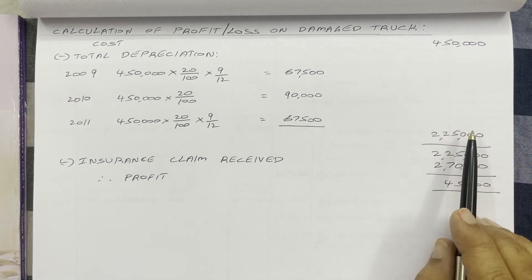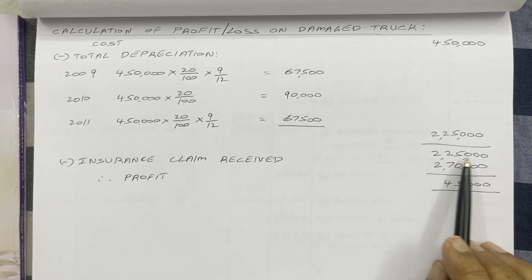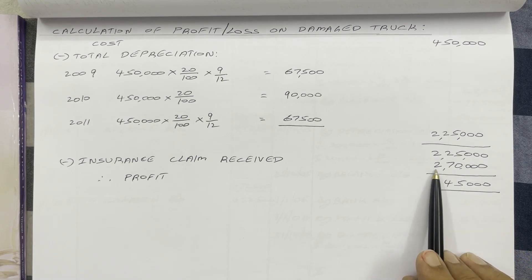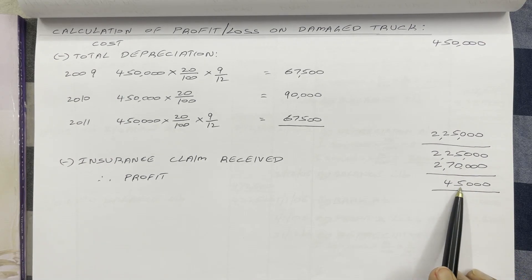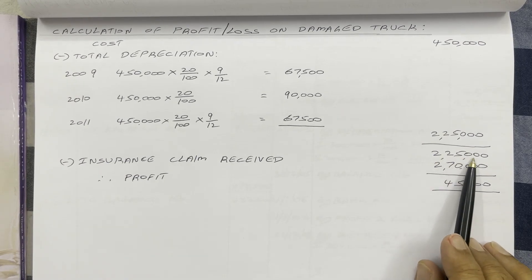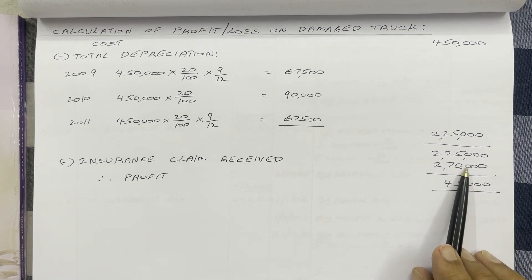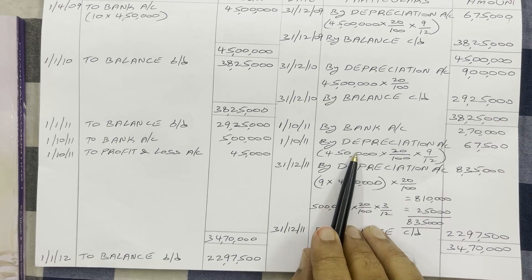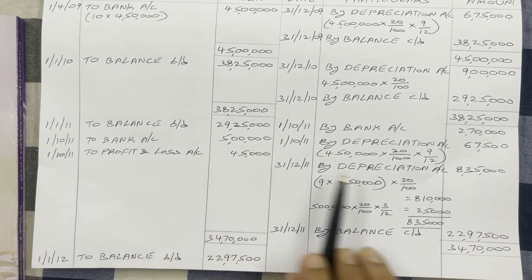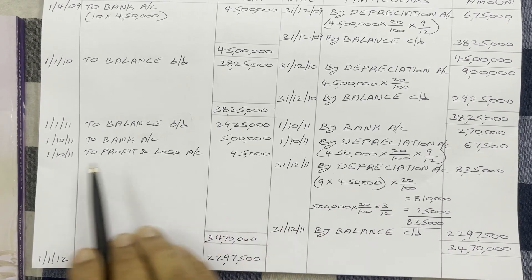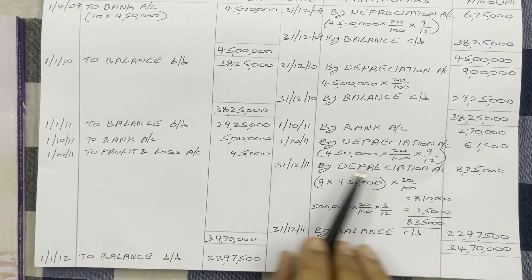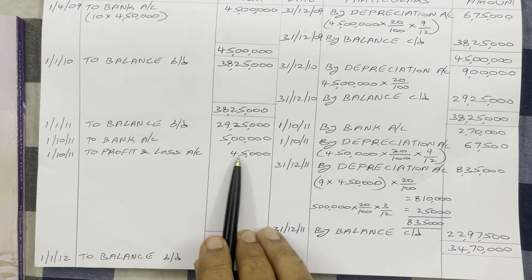Cost Rs 4,50,000 minus total depreciation Rs 2,25,000 — remaining book value is Rs 2,25,000. This Rs 2,25,000 worth asset is damaged, but the insurance company paid Rs 2,70,000. So we got an extra amount of Rs 45,000 — this is profit. In the truck account, profit is shown on the debit side; if loss, on the credit side. On 1st October 2011, write 'To Profit and Loss account Rs 45,000'.